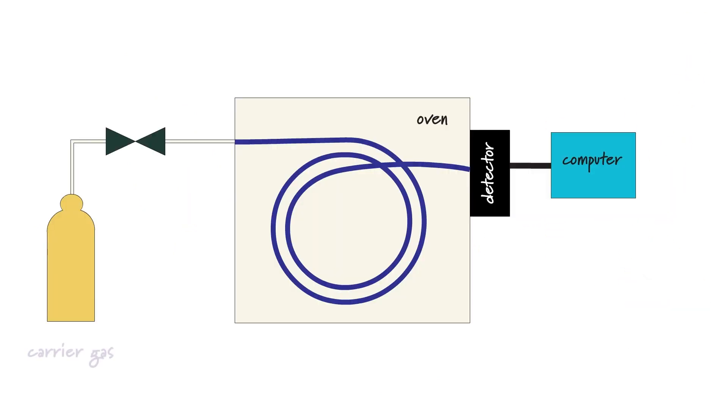Now like all chromatography there is a mobile phase and a stationary phase. The mobile phase is an inert carrier gas such as helium or nitrogen and the sample is injected into the stream of this gas before it flows over the stationary phase.